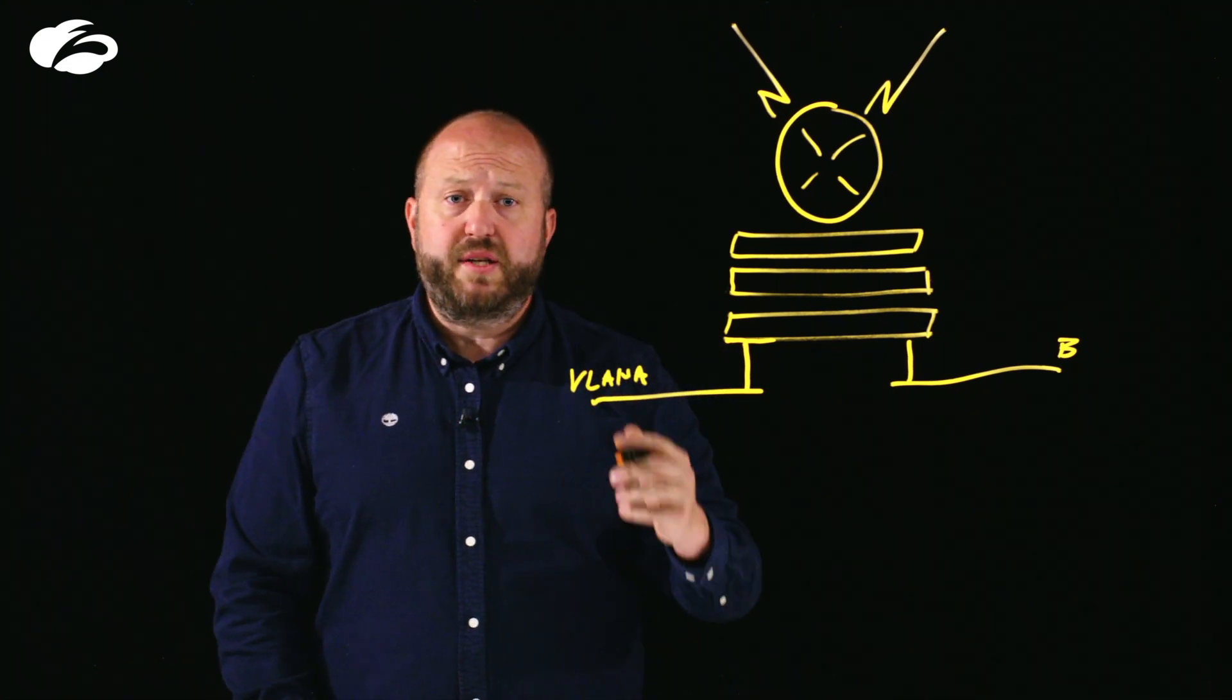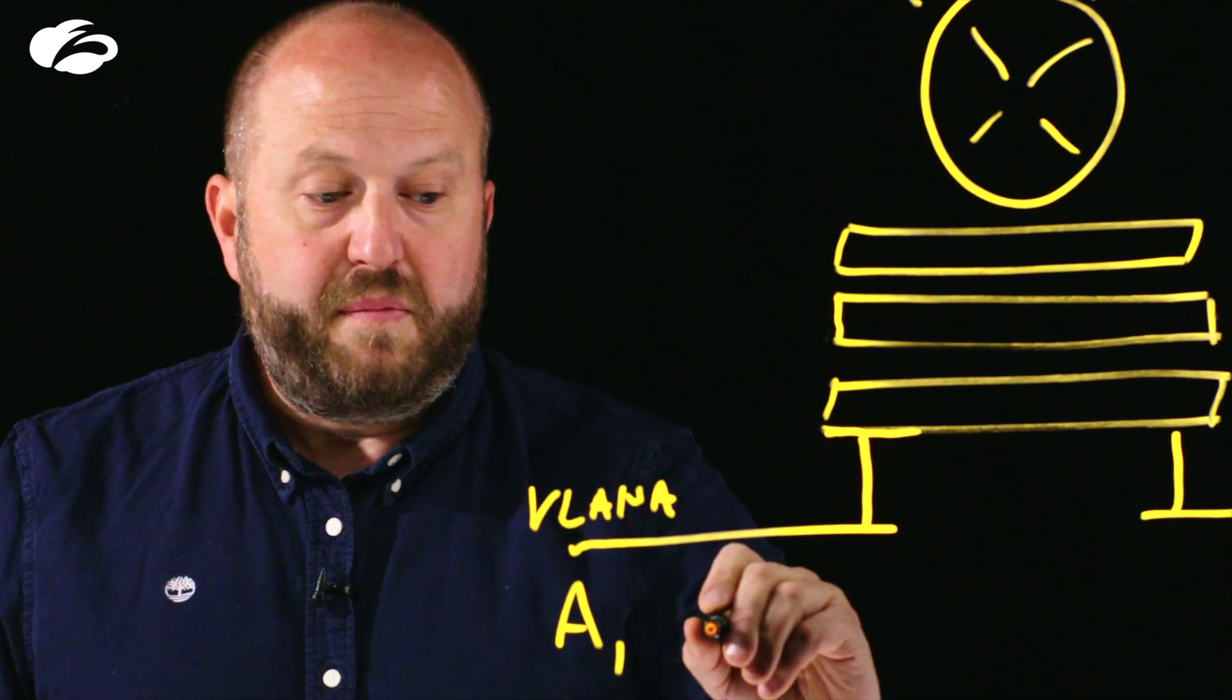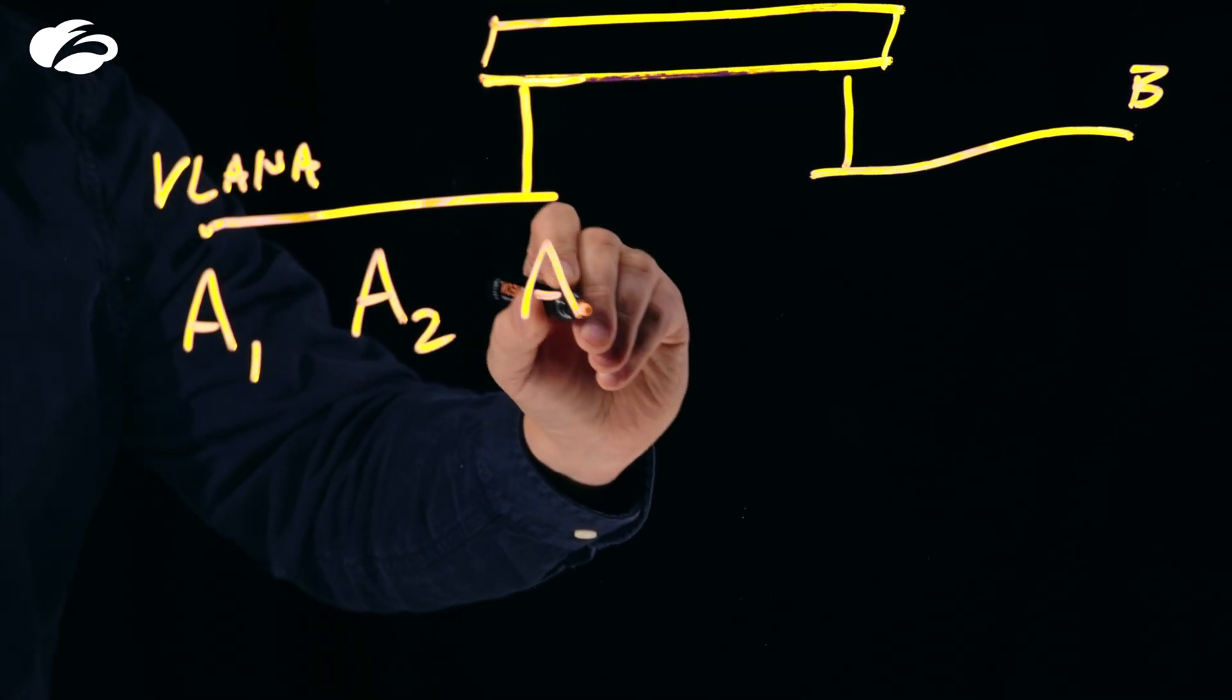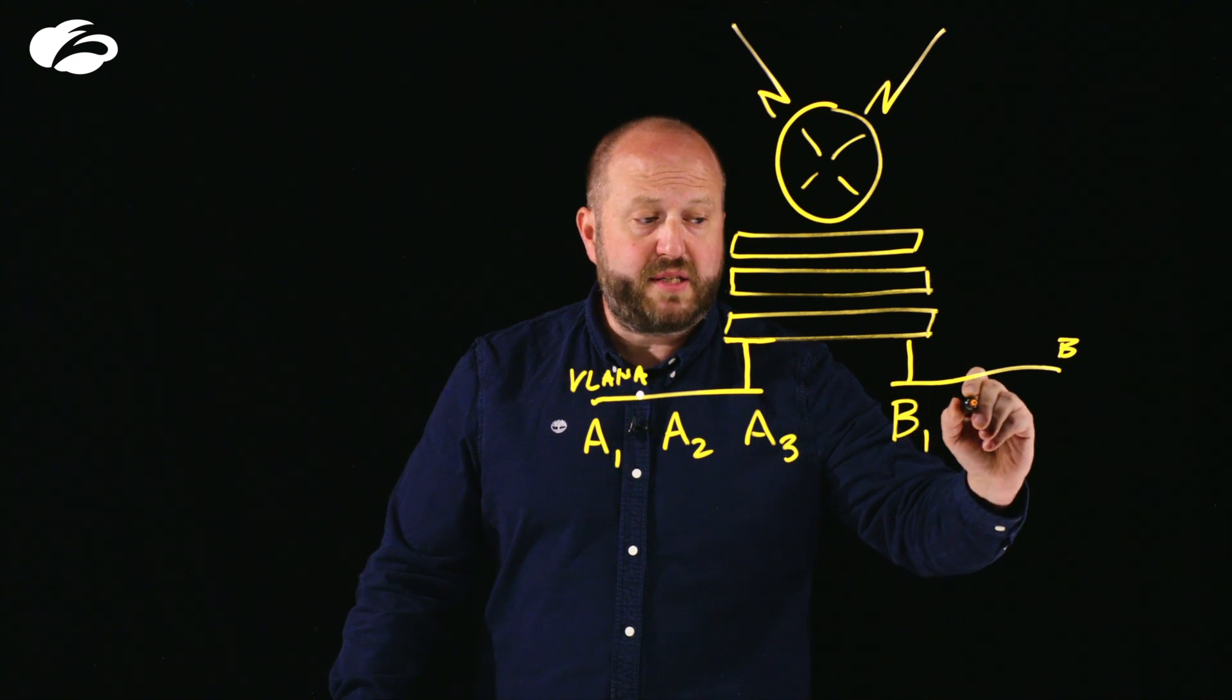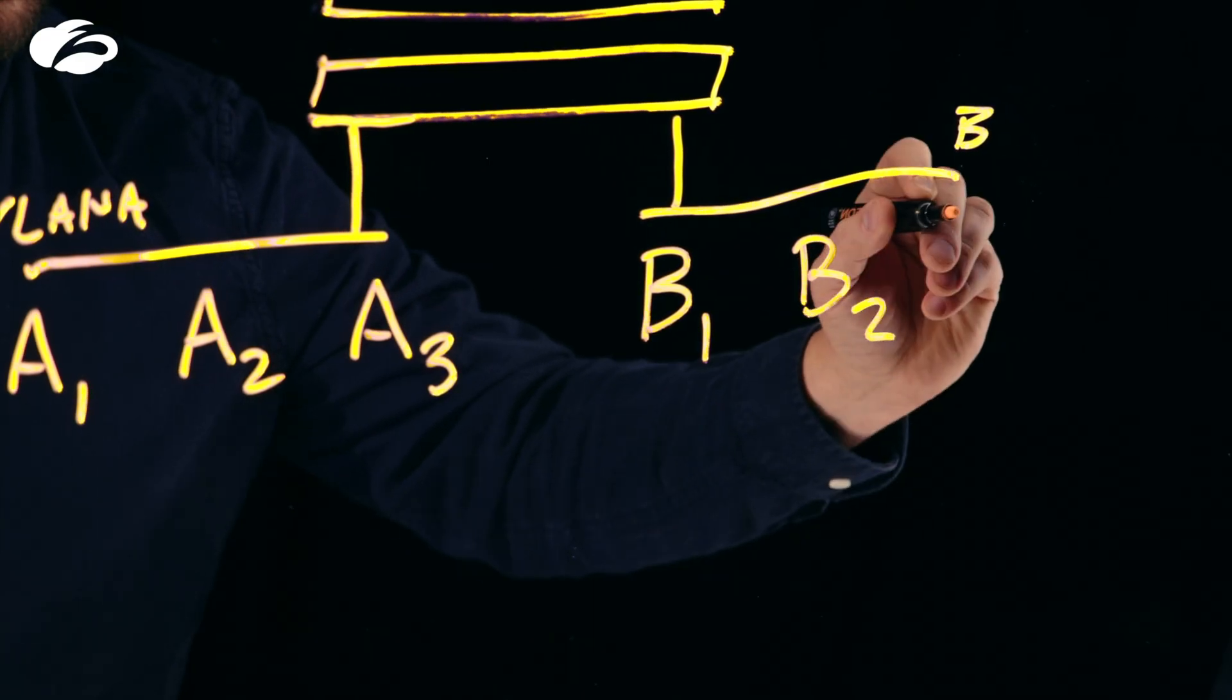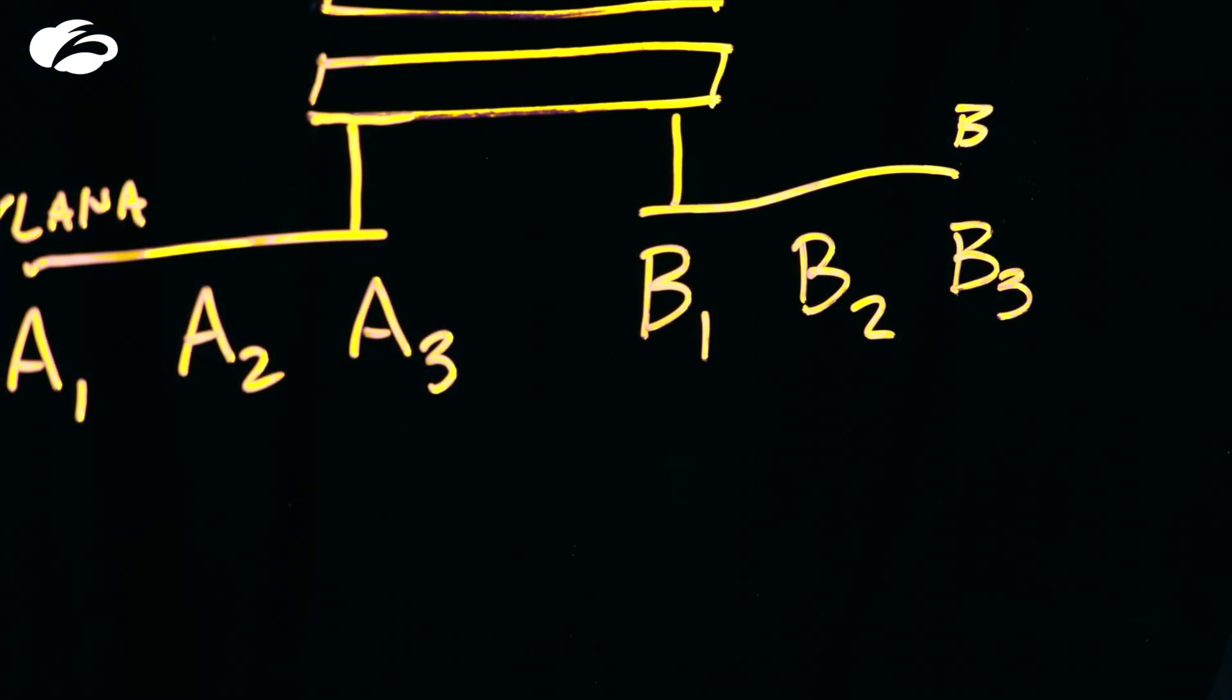And that segregation is generally usually based around use cases. So this usually separates things like corporate devices over here from things like servers or high risk devices like IoT and OT or guest access. So a different VLAN for each one of those.